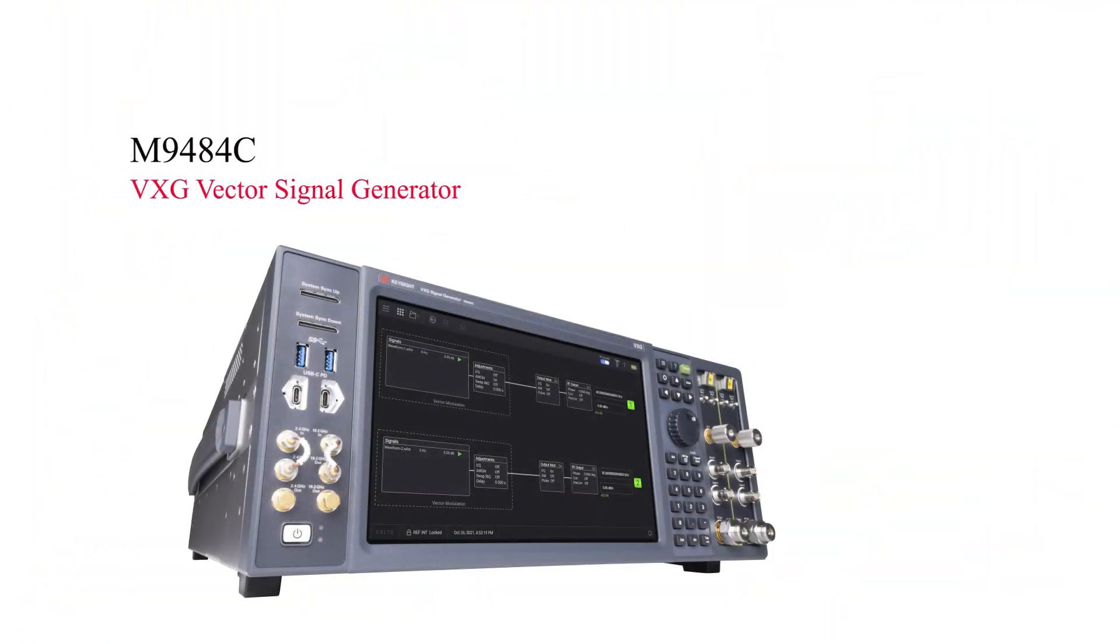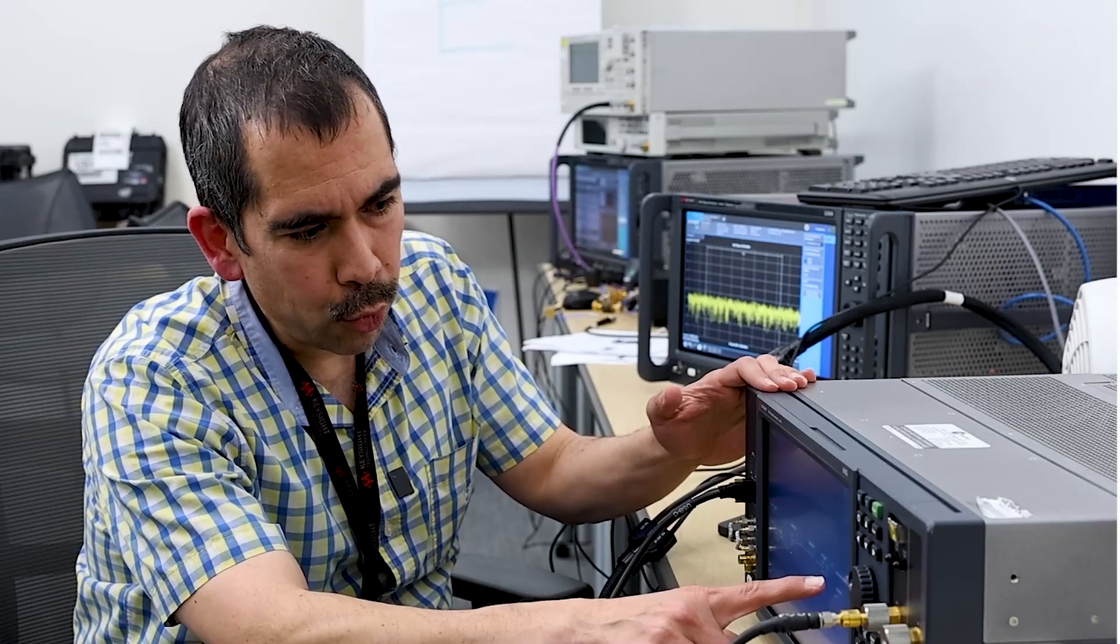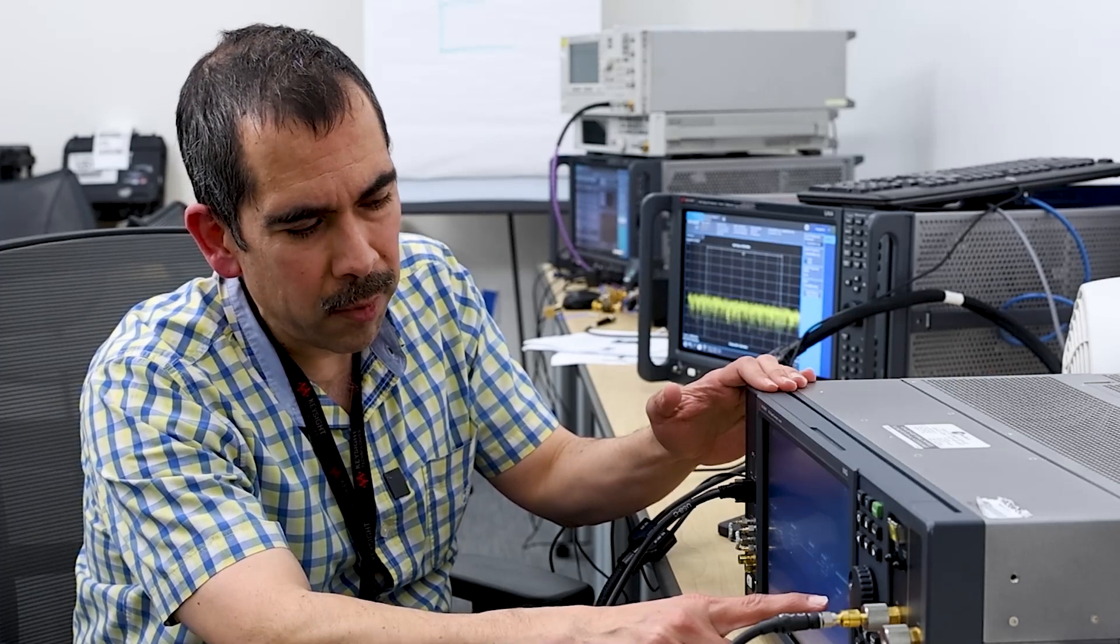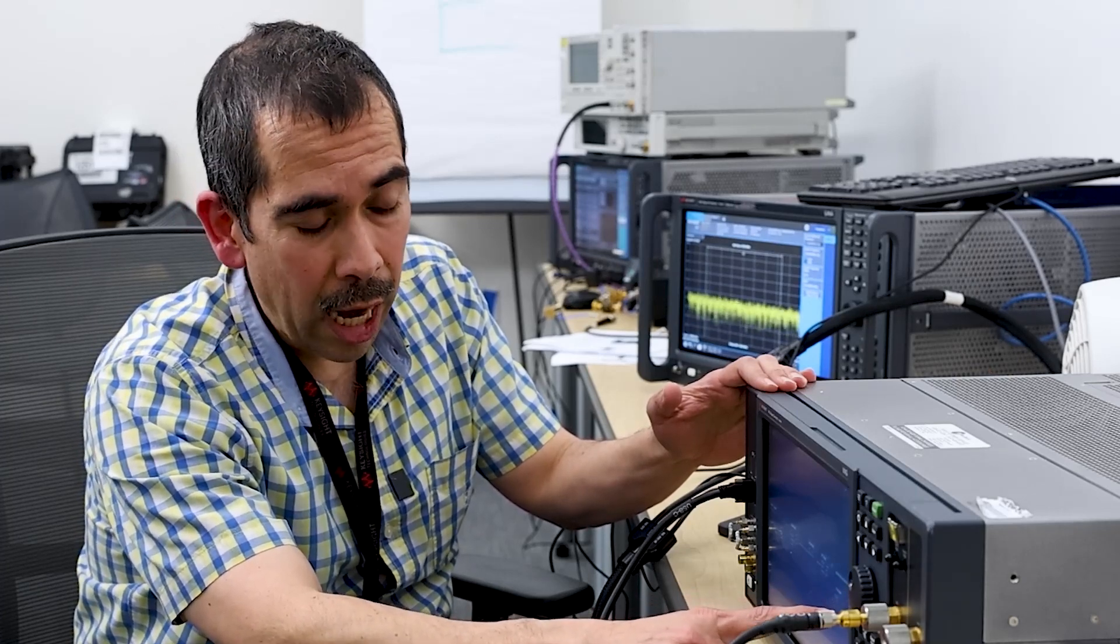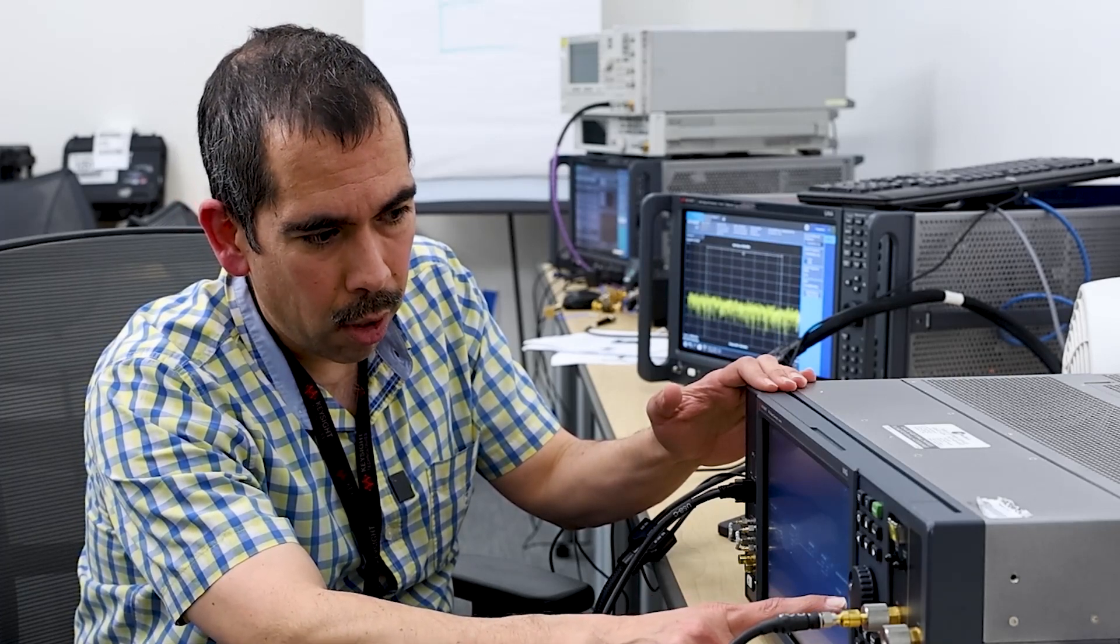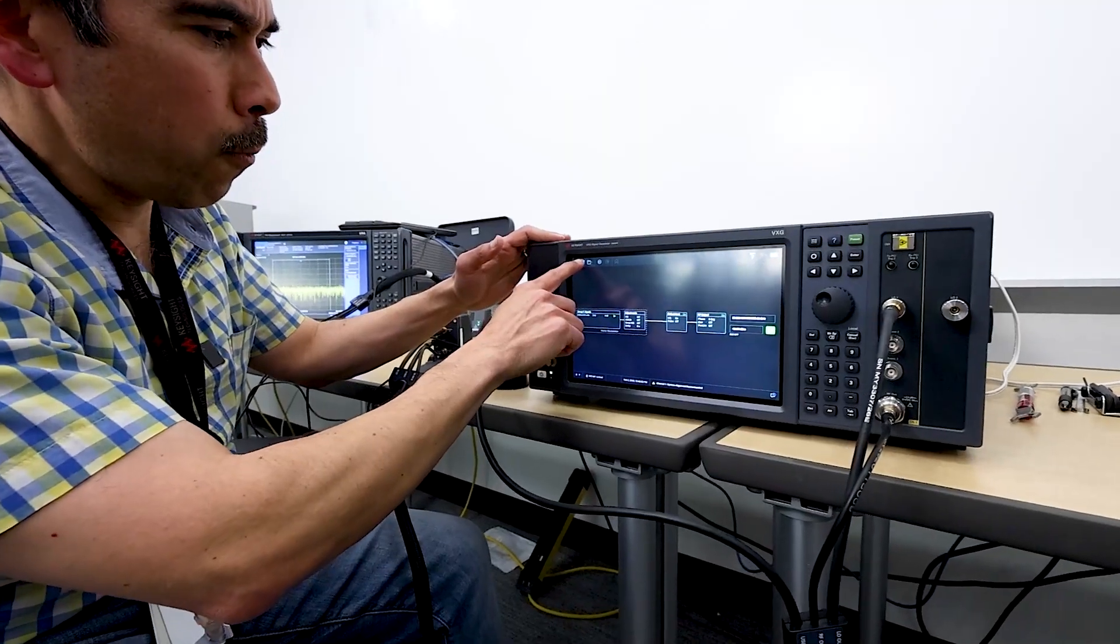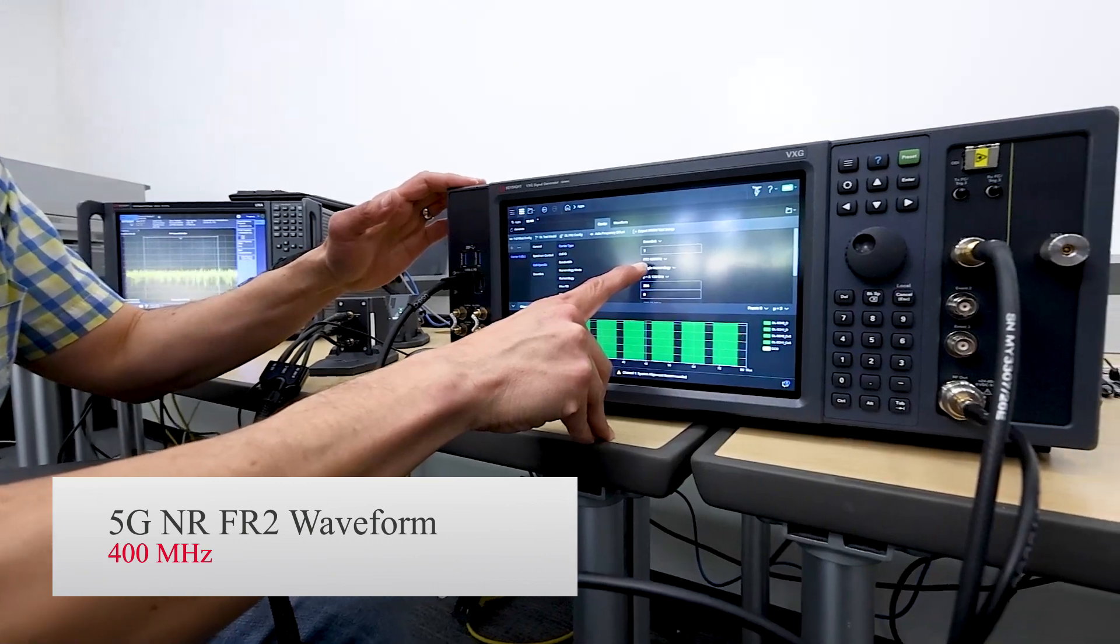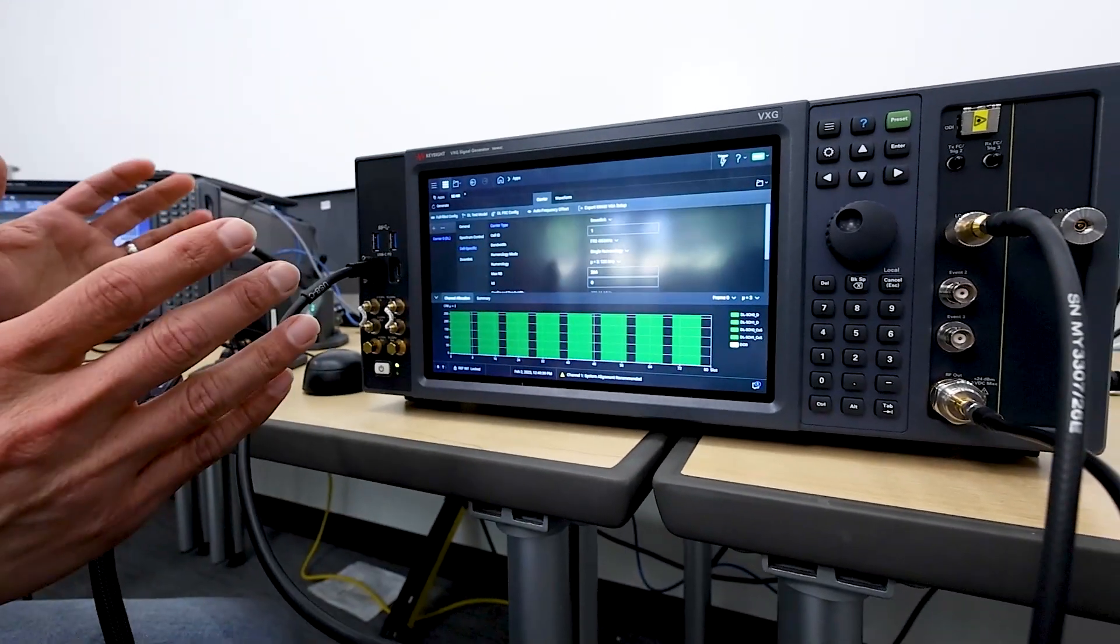Here we have the VSG, and what I'm doing here is I'm setting the frequency to 60 gigahertz. The amplitude of the signal is minus 10 dBm. I'm going to turn the RF out on. The waveform that I'm going to use is an FR2 waveform at 400 megahertz. So that's our bandwidth.